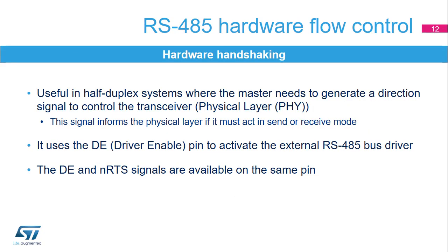For serial half-duplex communication protocols like RS-485, the master needs to generate a direction signal to control the transceiver, also called physical layer. This signal informs the physical layer if it must act in send or receive mode. In RS-485 mode, a control line called driver enable is used to activate the external transceiver control. The DE control line shares the pin with NRTS.